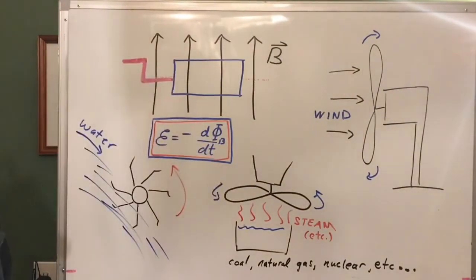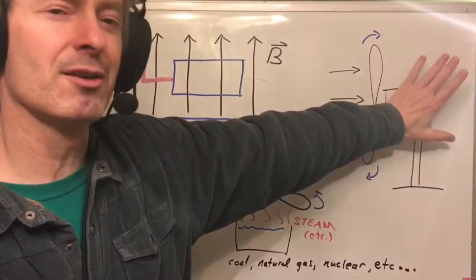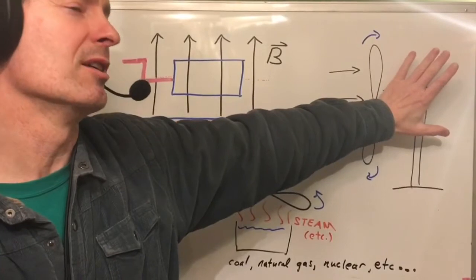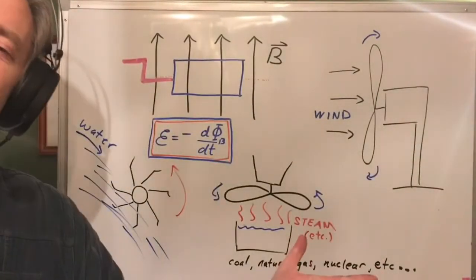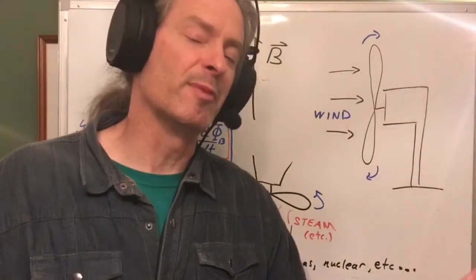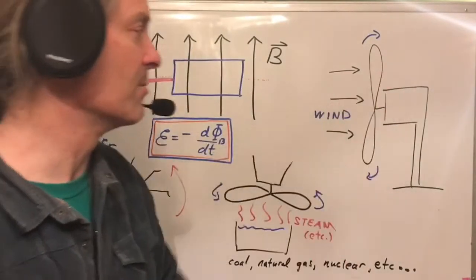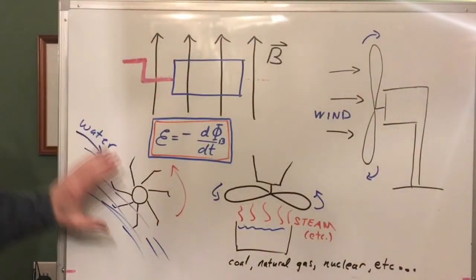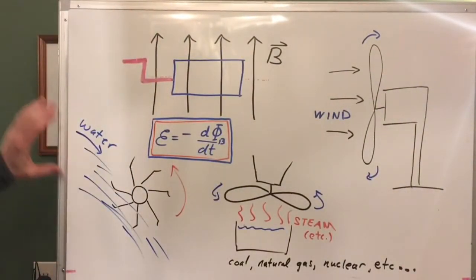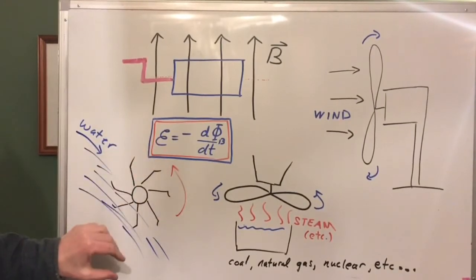Inside here there are loops of wire being rotated in a magnetic field, or it could be the other way around—could be magnets being rotated around loops of wire. Same difference. Hydroelectric power, same thing—we use the water to turn the crank for us.